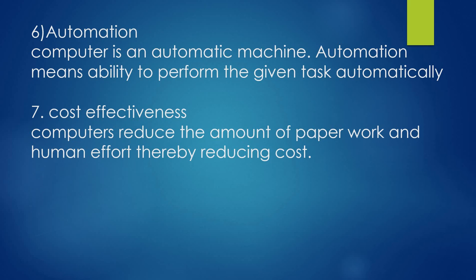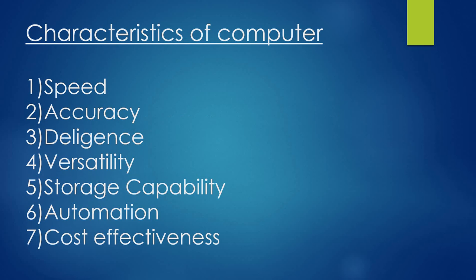The seventh characteristic is cost effectiveness. If you are using a computer, it reduces paperwork and human effort, so we can reduce the cost. The characteristics of a computer are: speed, accuracy, diligence, versatility, storage capability, automation, and cost effectiveness.